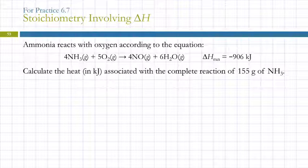So ammonia reacts with oxygen according to this equation, our balanced chemical equation, and they're giving us delta H. Is this exothermic or endothermic? Exothermic. Negative delta H. It's releasing 906 kilojoules every time four moles of ammonia reacts with oxygen. So this says calculate the heat in kilojoules associated with the complete reaction of 155 grams of ammonia. So this is stoichiometry but using heat.